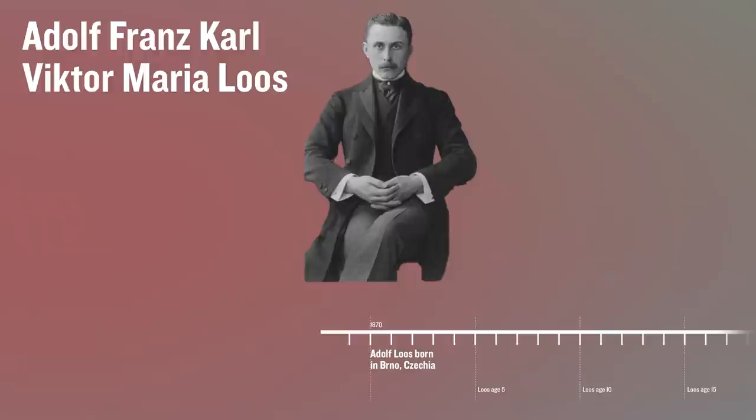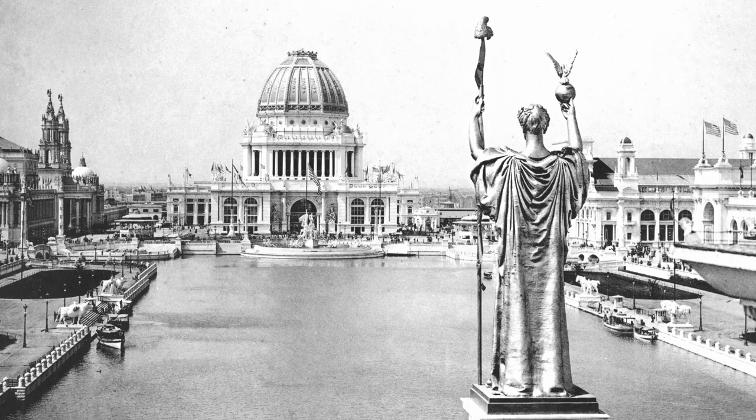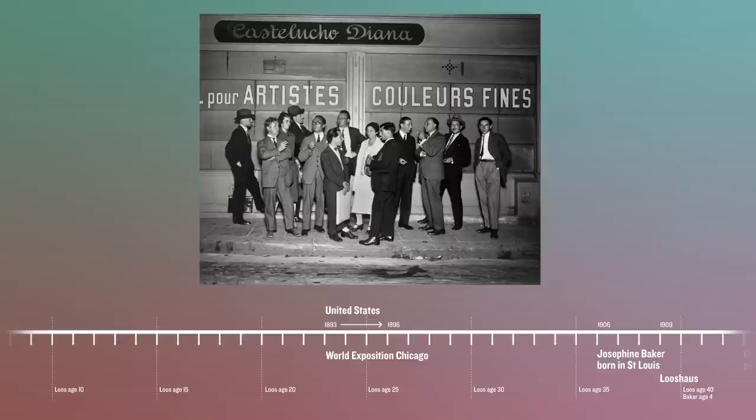The architect was born Adolf Franz Karl-Victor Maria Loos in 1870 in Austria to parents that worked in the stonemasonry business. In 1893 he moved to the United States where he would stay for three years while working various jobs, one of them as part of the World's Columbian Exposition in Chicago and other world expositions in St. Louis and in New York.